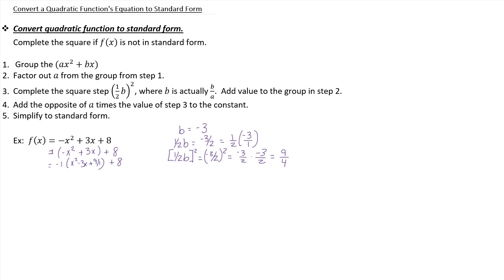Notice, it looks like I added in 9 fourths. However, we have to be careful that 9 fourths is being multiplied by the a that we had factored out. So it's actually a negative 9 fourths that we added in. I'm going to note that we actually added in negative 9 fourths.